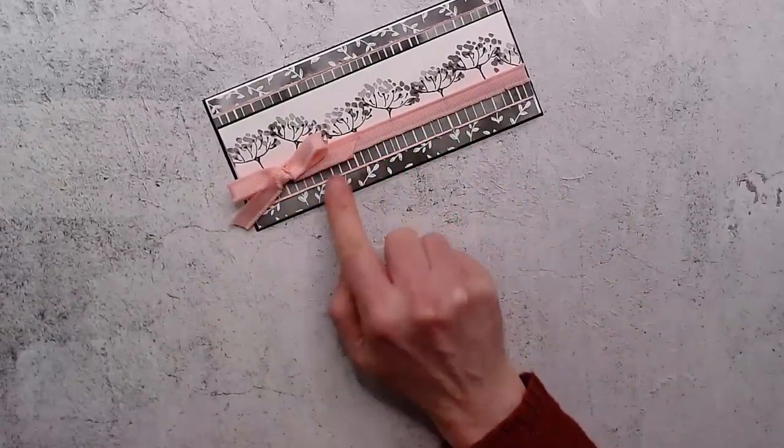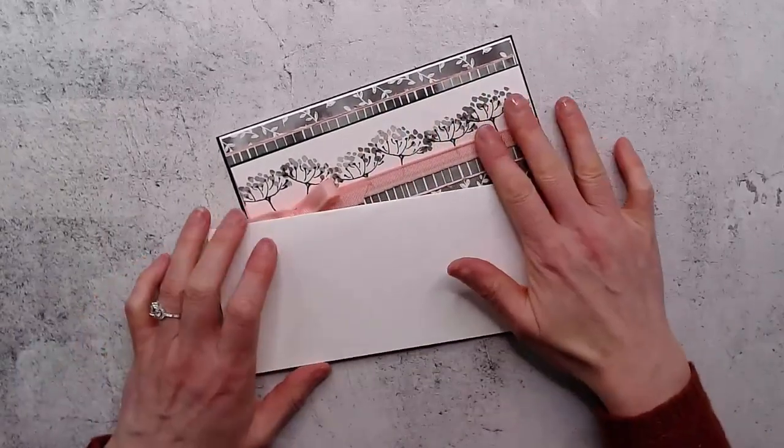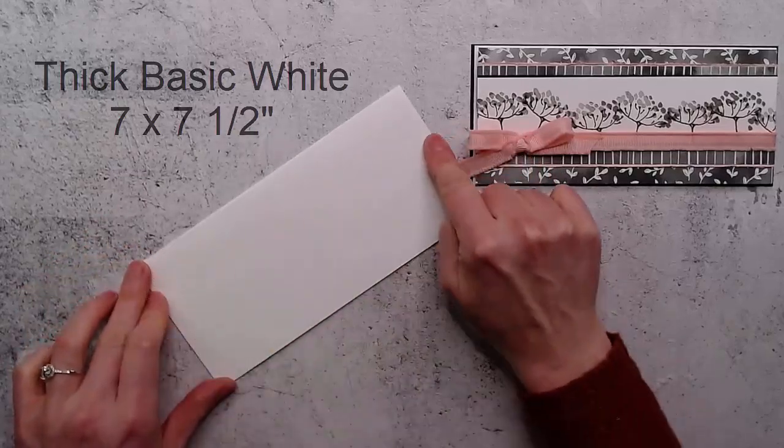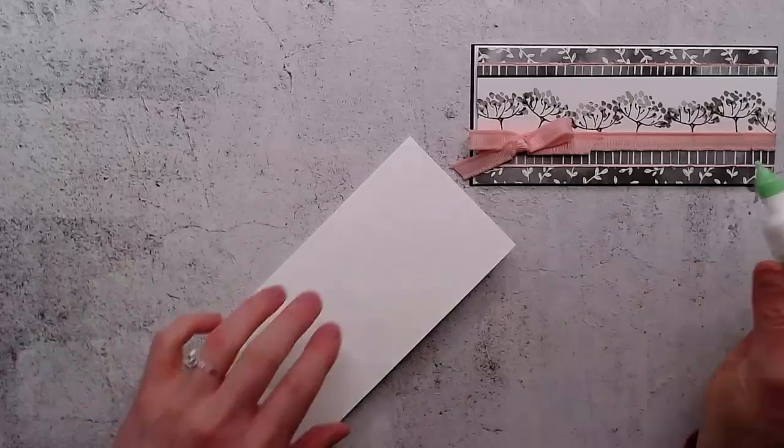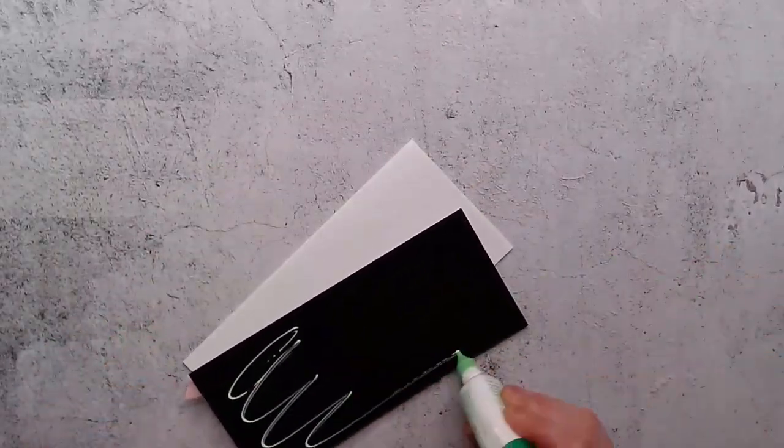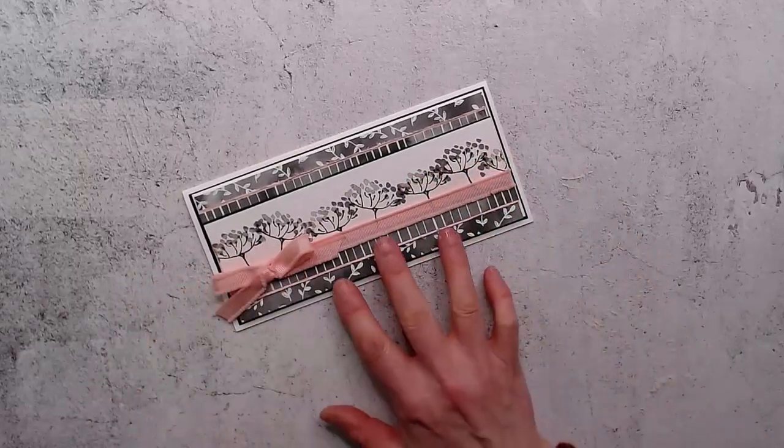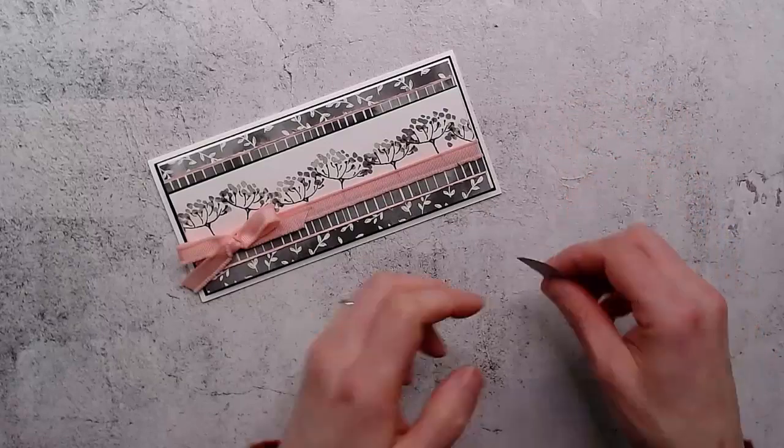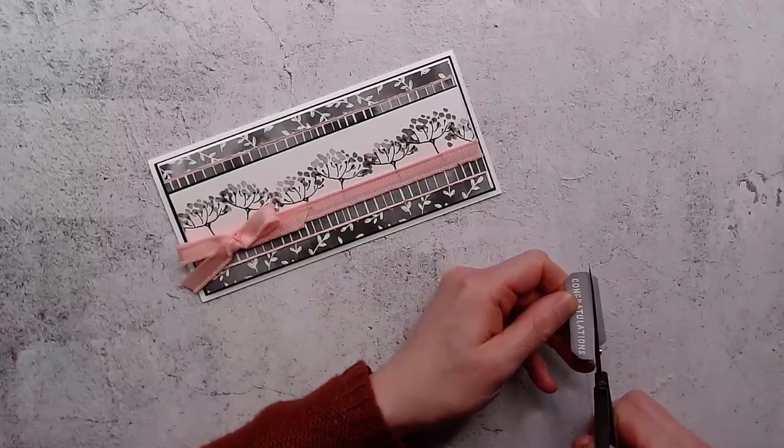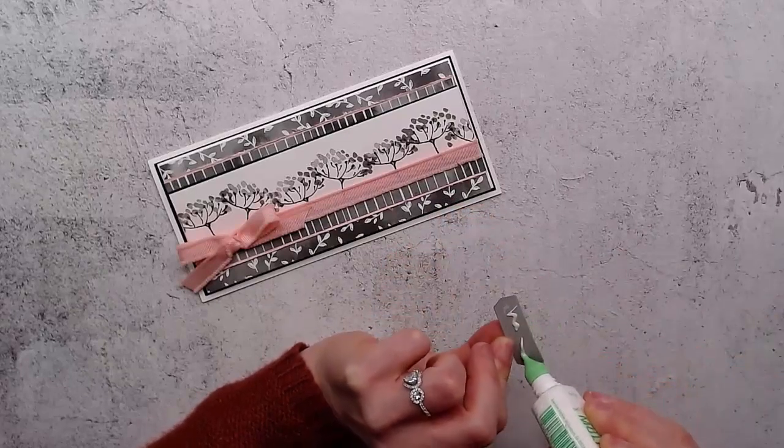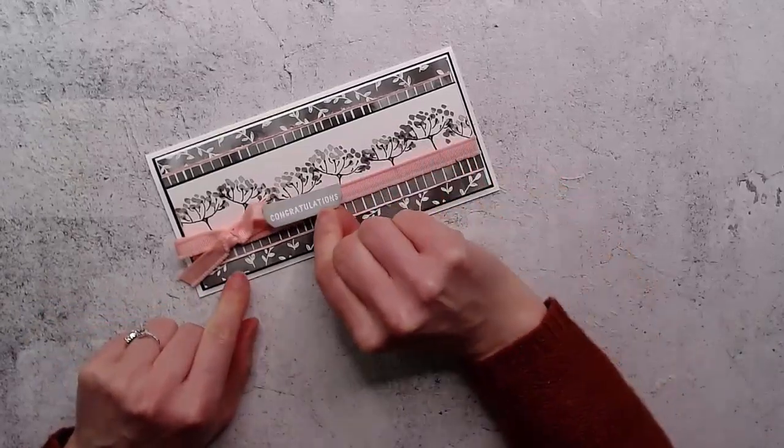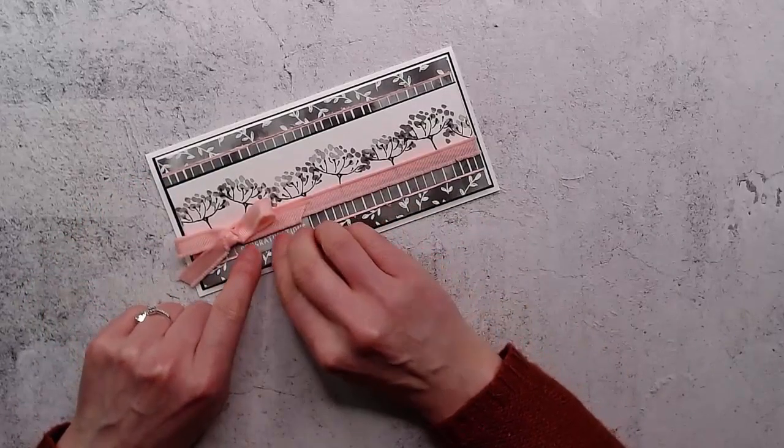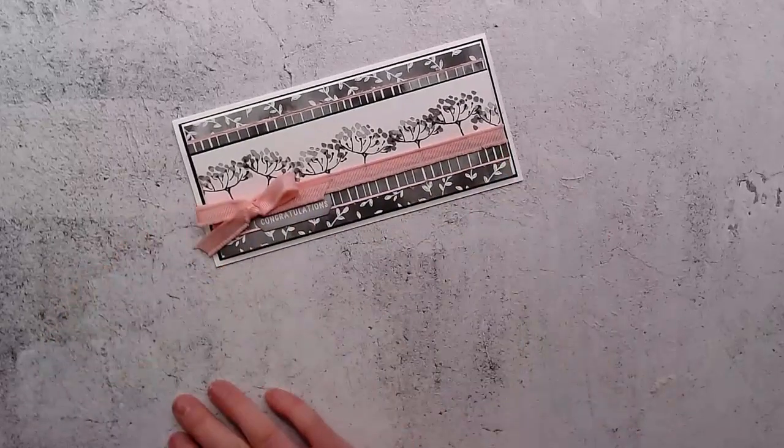Now I'm going to put it on my card base, which is seven and a half inches by seven inches. When you fold it in half, it's seven and a half by three and a half inches. I white embossed the words from this stamp set - it just says congratulations - and then die cut that out. I'm going to trim that top bit off, put a bit of glue on here, and tuck it here under the ribbon like a little tag.